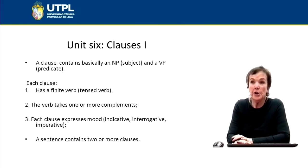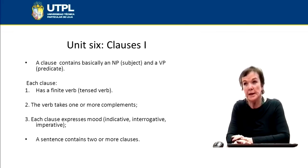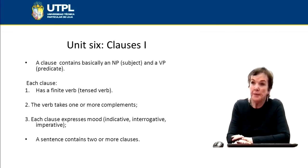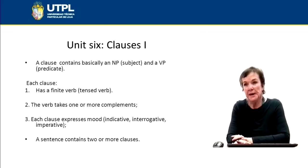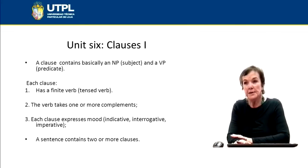The characteristics of clauses can be determined as follows. First, a clause has a finite verb. A finite verb can be a tensed verb — it can be in the present, past, or future — or also a verb plus an auxiliary. In the second place, the verb takes one or more complements. Remember from the first class, a verb can take a complement and an adjunct.